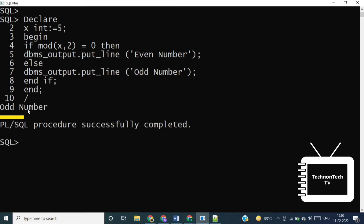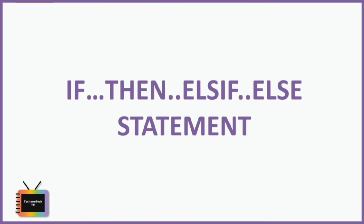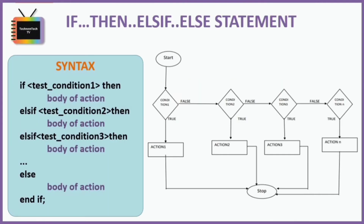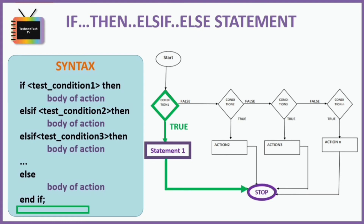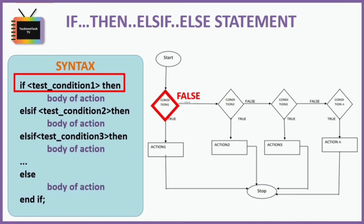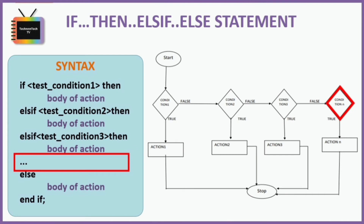Next is the IF-THEN-ELSIF-ELSE statement. It is used to check multiple conditions. Sometimes it is required to test more than one condition, and for this the IF-THEN-ELSIF-ELSE statement is suitable. All conditions are tested one by one; whichever condition is true, that block of code is executed. If all conditions result in false, the ELSE part is executed. In the syntax, condition 1 is checked first; if true, its statements execute and control exits the IF block. If false, condition 2 is checked, and so on. We can have multiple ELSIF clauses with as many conditions as needed.